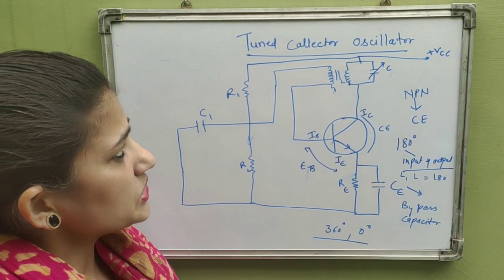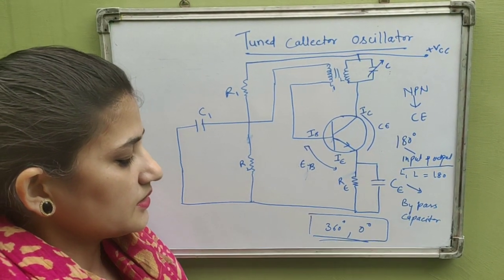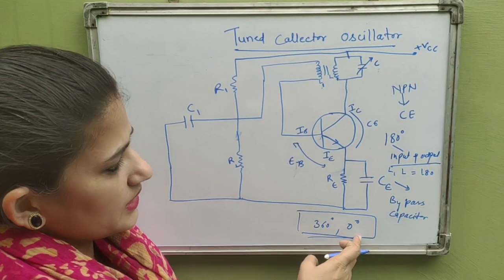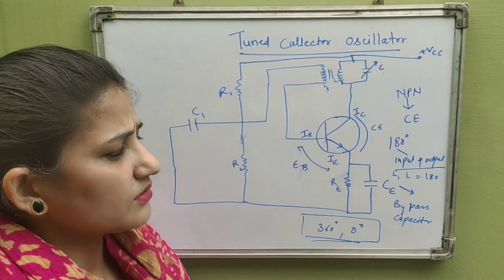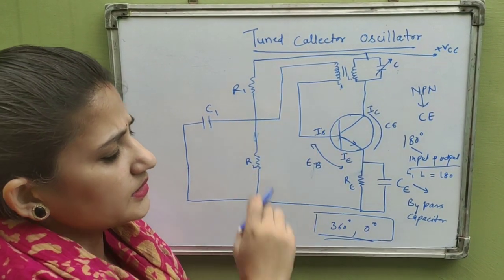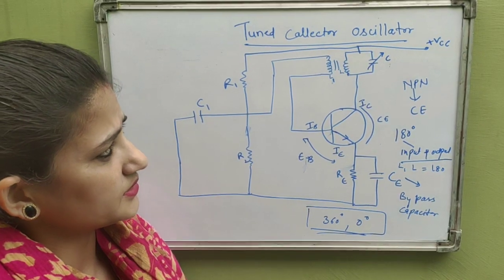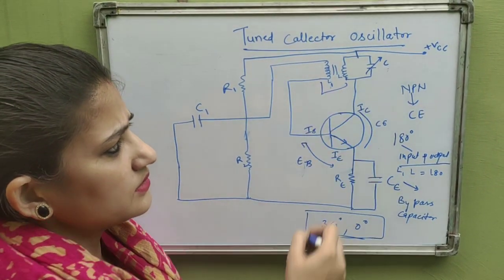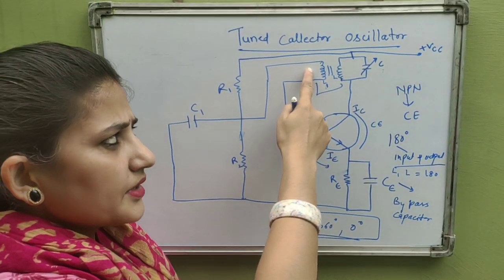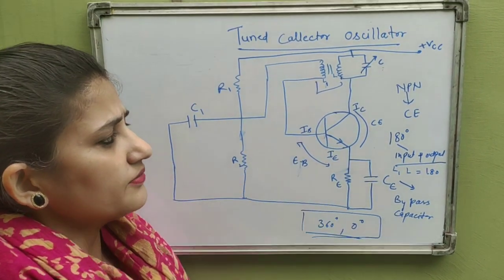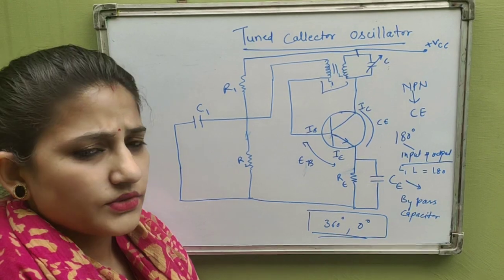The positive feedback is confirmed by the total phase shift of 360° or 0°: 180° from the NPN common emitter configuration and 180° from the mutual coupling between L1 and L2. This circuit also forms a radio frequency transformer, where the primary coil is L and the secondary is L1. The magnitude of the induced EMF depends on the turn ratio of L1 and L2, which determines whether the amplitude is increasing or decreasing.